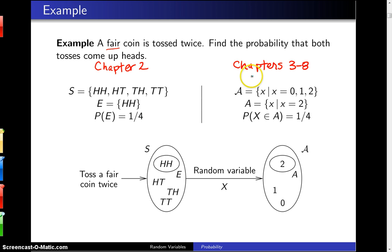Now with random variables, we're going to define the random variable capital X to be the number of heads tossed. In this case, script A, which is the support of the random variable, will be all possible values of that random variable. And you can get zero, one, or two heads. And the event of interest here is the probability that we get exactly two heads.